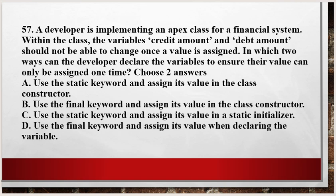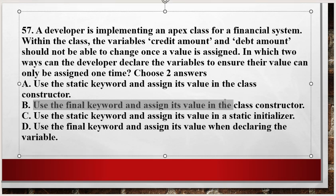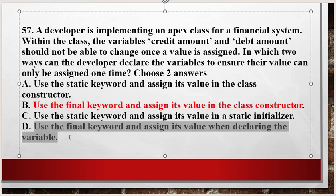Question number 57: A developer is implementing an Apex class for a financial system. The variables credit amount and debit amount should not be able to change once a value is assigned. In which two ways can the developer declare the variables to ensure their value can only be assigned one time? Options: Use the static keyword and assign its value in the class constructor. Use the static keyword and assign in a static initializer. Use the final keyword and assign its value when declaring the variable. The correct answers are Option B and Option D.